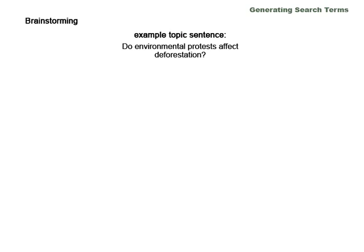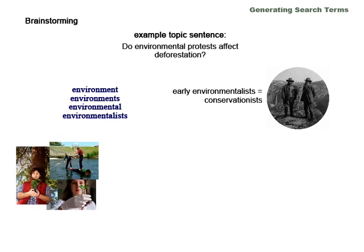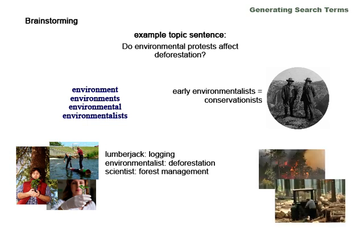Let me discuss a few ways to brainstorm search terms, keeping our example topic sentence in mind. First, brainstorm different forms and spellings of your main idea words. Consider the time period you're studying and how it might impact your terms — for example, early environmentalists were known as conservationists. Think about how different people in different positions might represent your topic: a lumberjack may refer to 'logging,' while an environmentalist might use 'deforestation,' and a scientist might refer to 'forest management.' It can also be helpful to think about subtopics related to your main idea, such as healthy forest initiative, salvage logging, or firefighting.